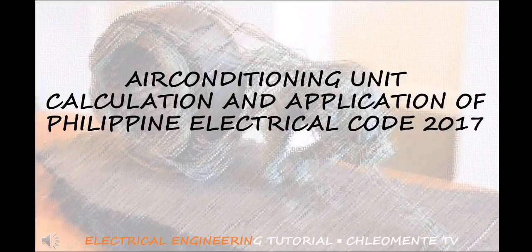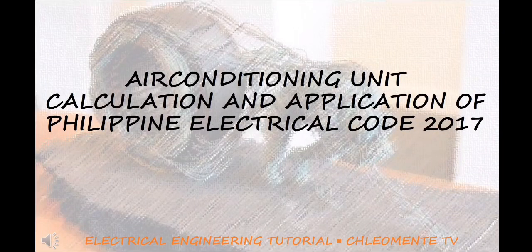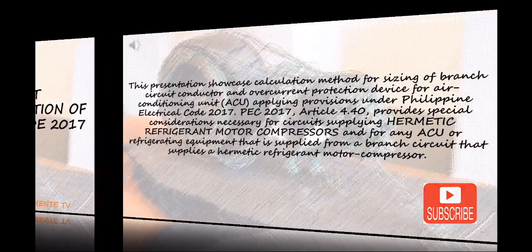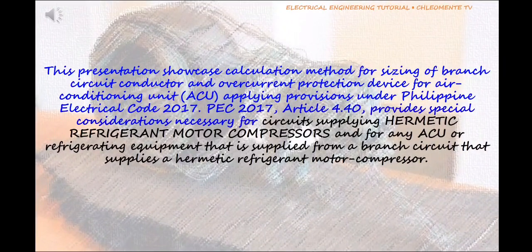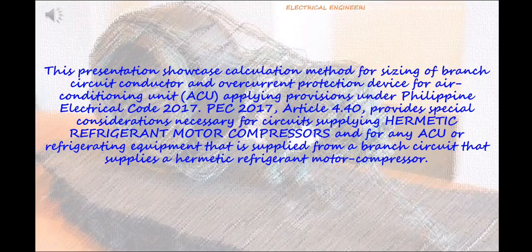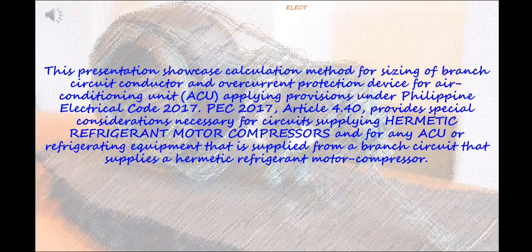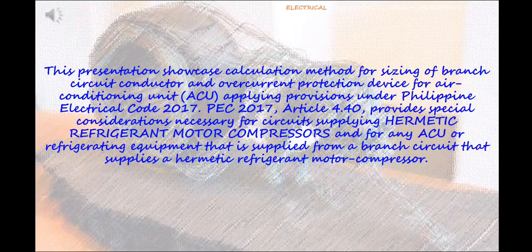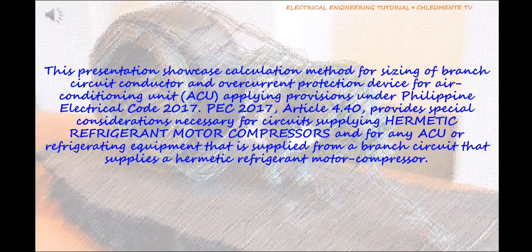Air Conditioning Unit Calculation and Application of Philippine Electrical Code 2017. This presentation showcases calculation method for sizing of branch circuit conductor and overcurrent protection device for air conditioning unit (ACU) applying provisions under Philippine Electrical Code 2017, PEC 2017, Article 4.40, which provides special considerations necessary for circuits supplying hermetic refrigerant motor compressors and for any ACU or refrigerating equipment that is supplied from a branch circuit that supplies a hermetic refrigerant motor compressor.